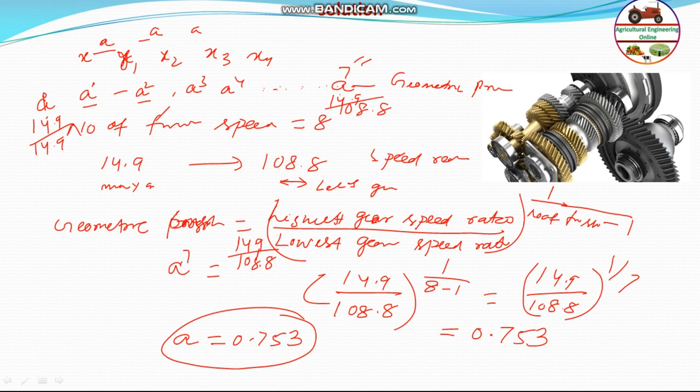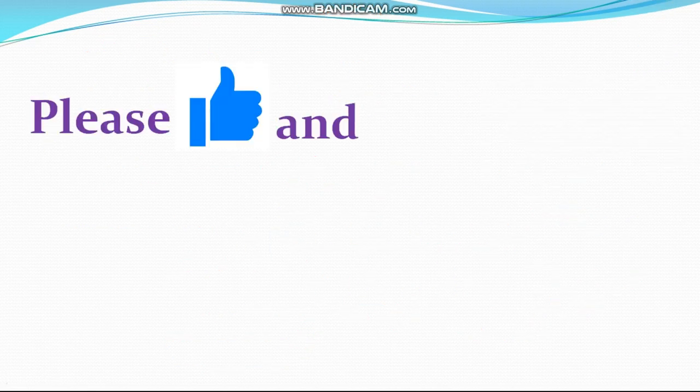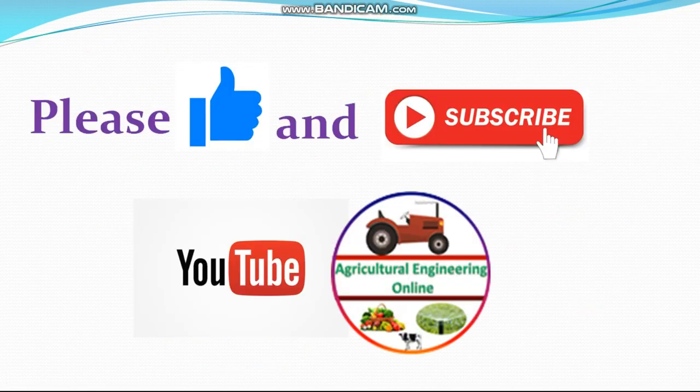So geometric progression or geometric constant a will be equal to 0.753. This is a very simple answer, but you need to understand the peculiar thing is the highest and lowest, so the total gear reduction should be 7. It will be a to the 7, so you can get the answer. I hope you understand the problem. Please like and subscribe to my channel. Also please comment in the comment section.